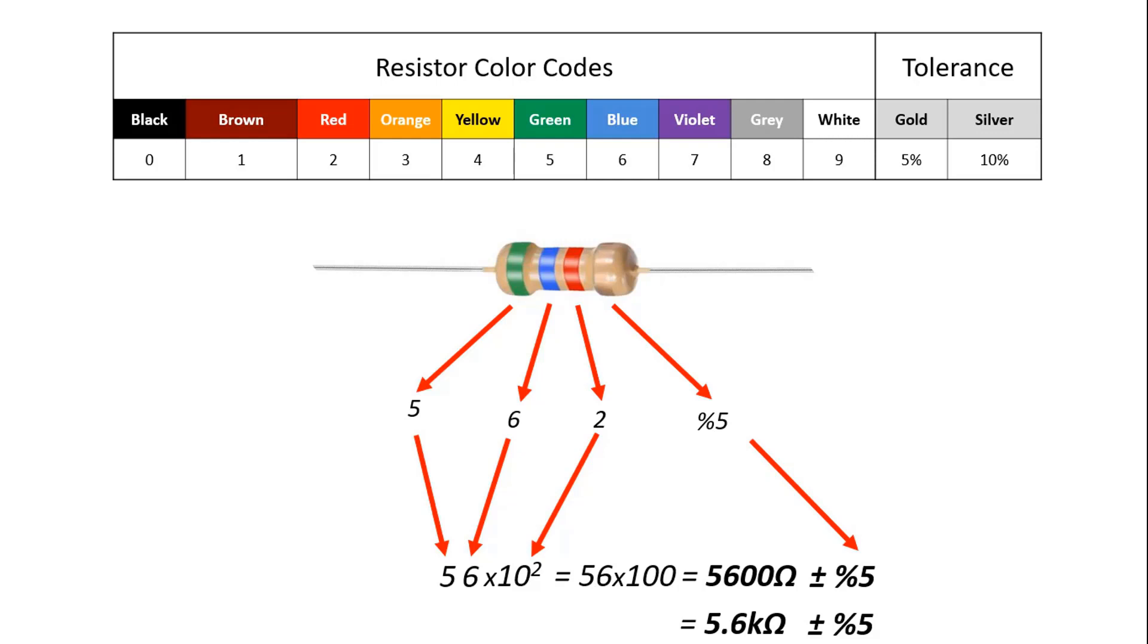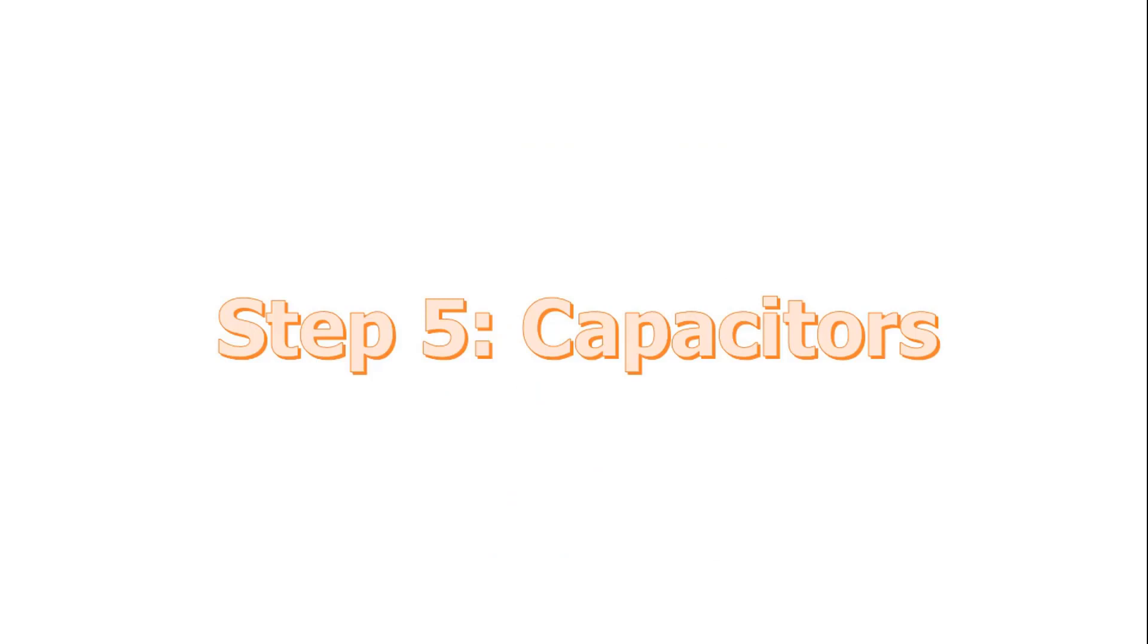Any resistor of over 1000 ohms is typically shortened using the letter K. For instance, 1000 would be 1 kilo ohm, 3900 ohms would be translated to 3.9 kilo ohms, and 470,000 ohms would become 470 kilo ohms. Values of ohms over a million are represented using the letter M. In this case, 1 million ohms would become 1 mega ohm.